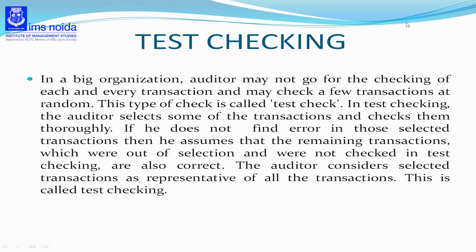The auditor does not check each and every transaction of the organization. This happens in big organizations where there are a huge number of transactions and it becomes impossible for the auditor to check each and every one. What he can do is go for test checking, where he will choose some important transactions, check them thoroughly, and give his opinion. This is the basic concept of test checking.